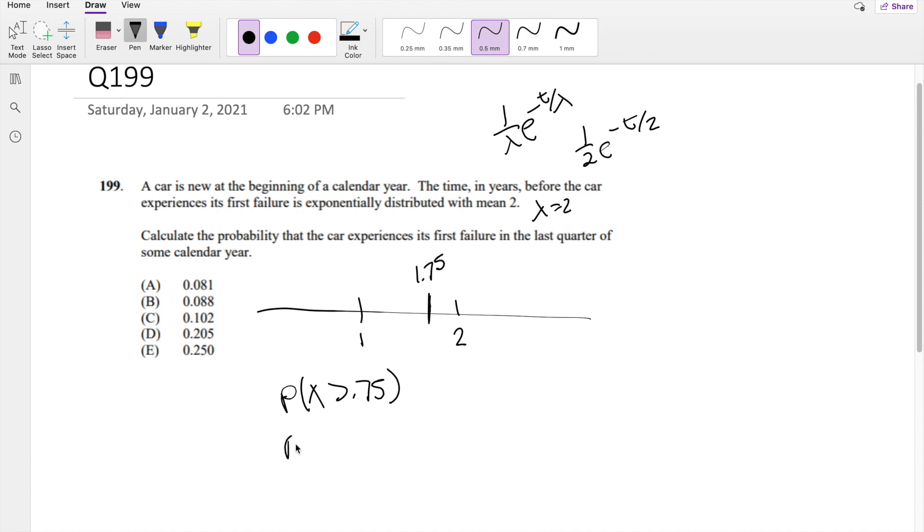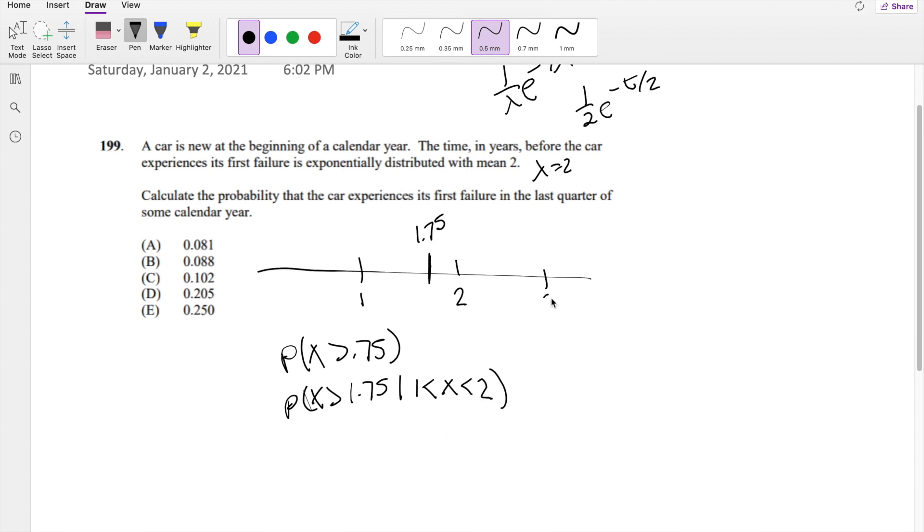Because then now we're looking for just 1.75. The probability that x is greater than 1.75, given it's between, x is between x and 2, right? And likewise, if it's like 3, we're looking for this part right here, right? 2.75. So the probability that x is greater than 2.75, given x is between 2 and 1, 2 and 3 I mean.